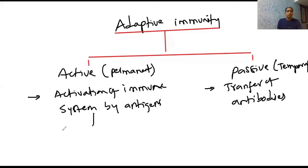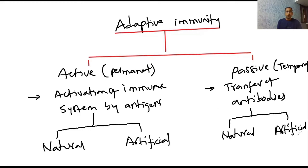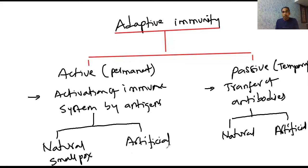Active immunity is of two types: natural and artificial. Natural active immunity occurs with a natural entry of pathogen at the time of infection — best example is smallpox, where a person infected with smallpox develops antibodies against that pathogen. In artificial active immunity, antigens are introduced intentionally into the body to activate the immune system — best example is vaccination.